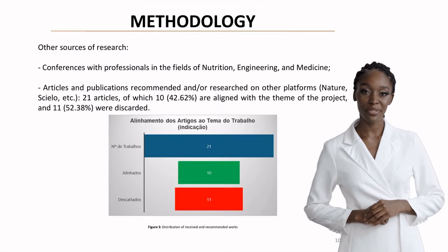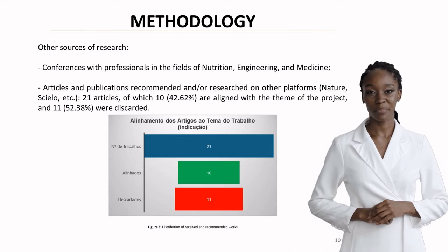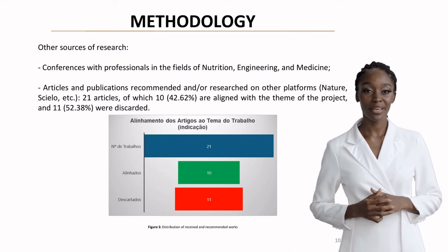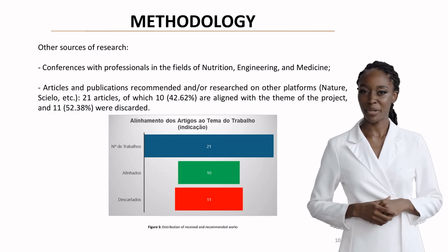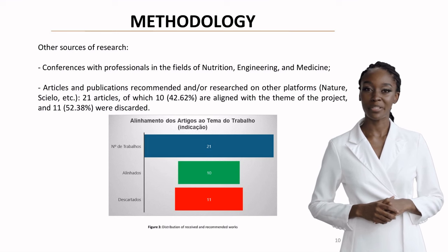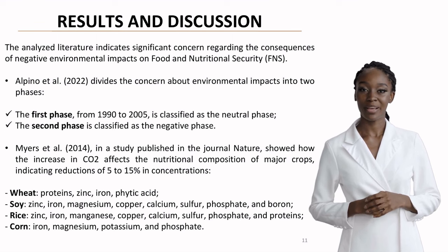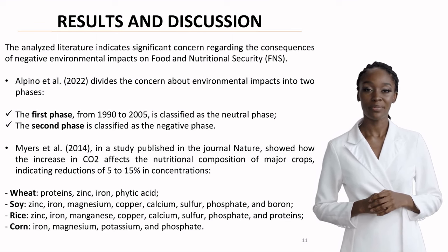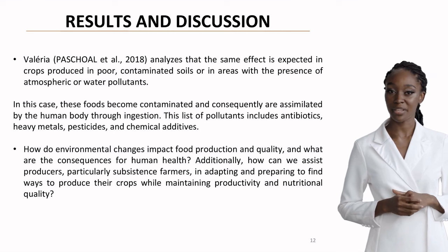Our analysis revealed significant concerns about environmental impacts on food security. Research from 1990 to present shows an increasing negative trend. Particularly noteworthy is Myers' Nature Study, demonstrating how increased CO2 levels reduce nutritional content in major crops. Further findings highlight concerns about soil contamination and pollutants affecting food quality. This raises crucial questions about adapting agricultural practices to maintain both productivity and nutritional quality, especially for subsistence farmers.